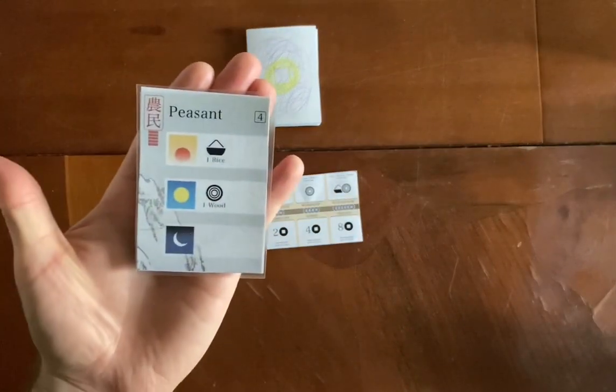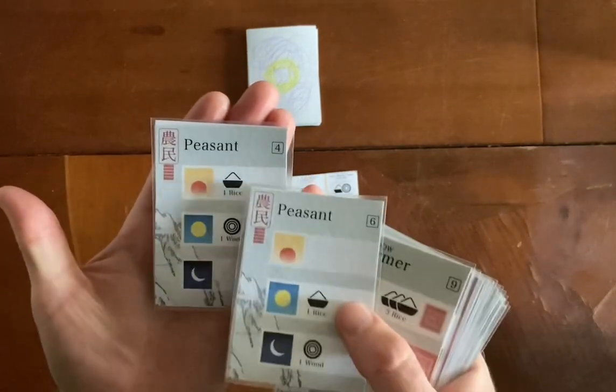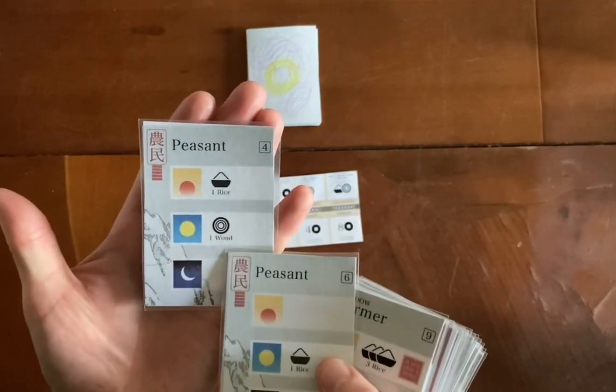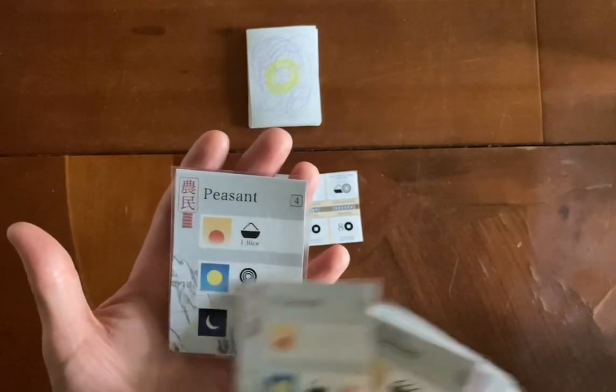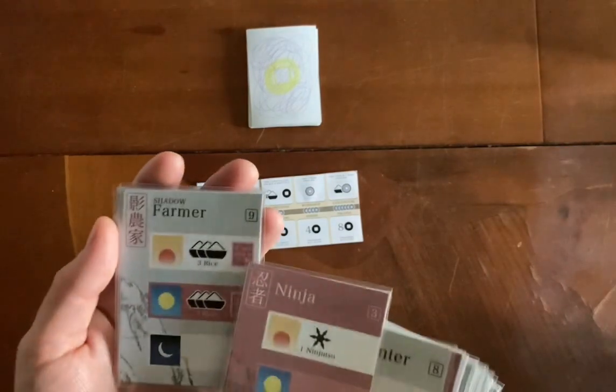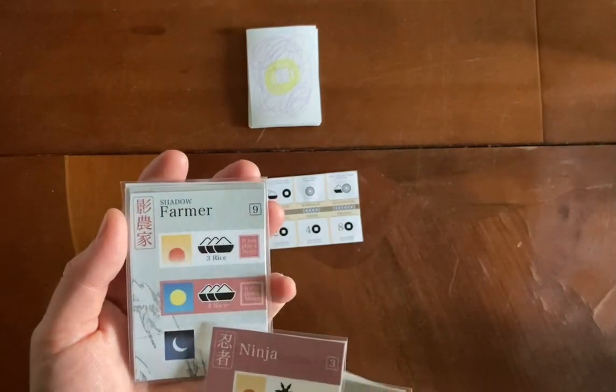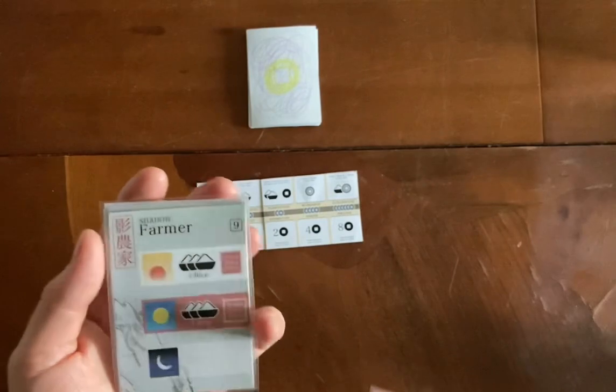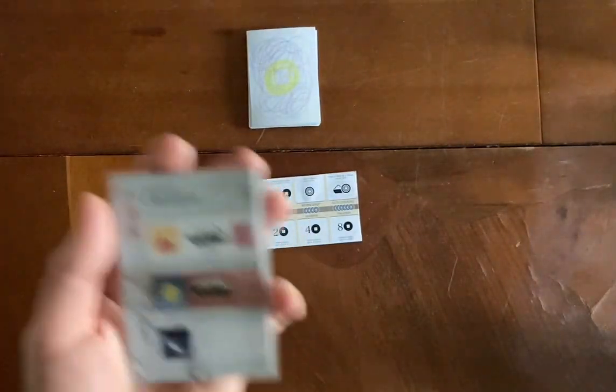Some of the cards look like this, a peasant, which in the night you can collect a rice or you can collect a wood in the daytime. Or a shadow farmer, which gives you three rice if you play a ninja card. Or three rice in the day if you play a ninja card. So it's like backing the ninjas.